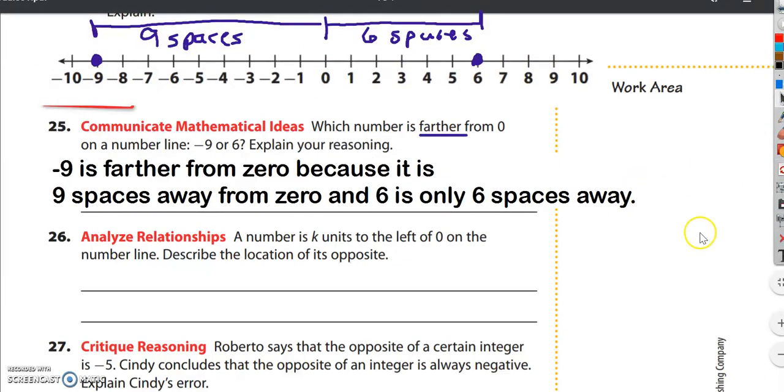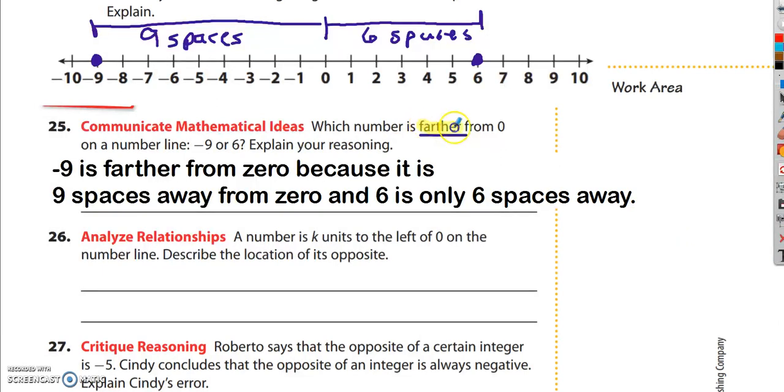I would say negative 9 is farther from 0 because it is 9 spaces away from 0, and 6 is only 6 spaces away. We're not talking about which one is positive or negative. We're just talking about which one is farther from 0.